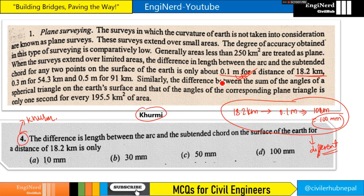Kurmi is playing a double role here. In his theory he says for 18.2 kilometers the difference is 0.1 meter, but in his objective questions he gives the answer as 10 mm, which is 1 centimeter. So either he is wrong in the theory or wrong in the objective. I think he is right in the objective and wrong in the theory.